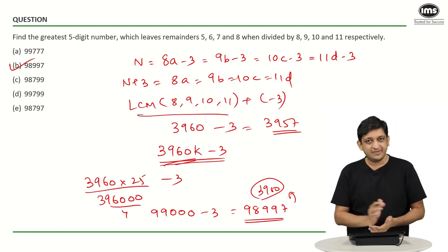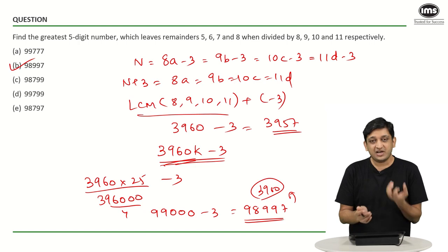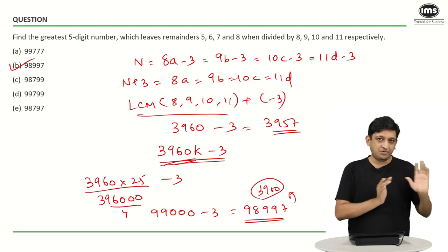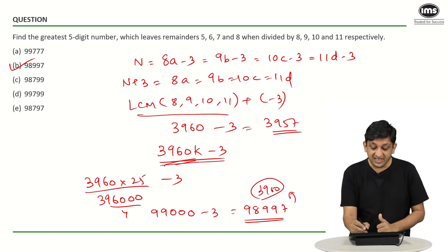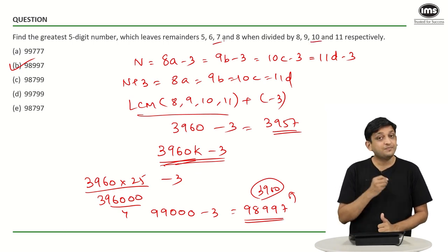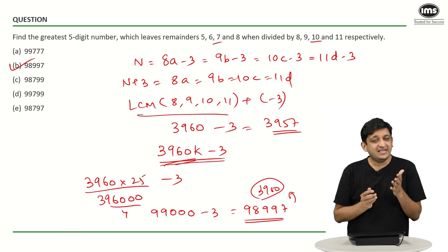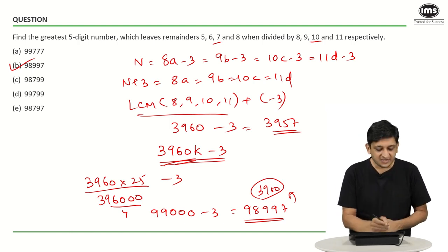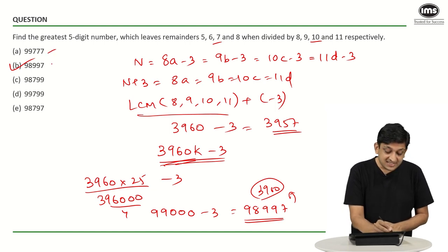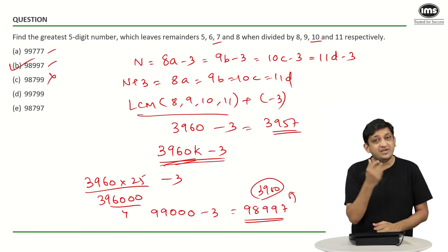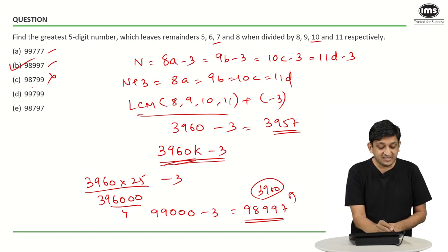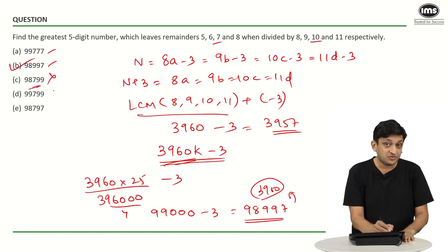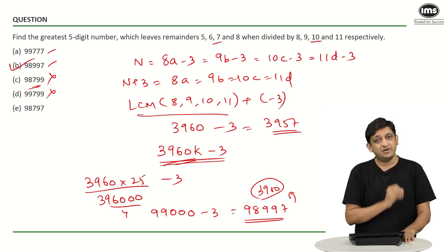The shorter way to solve this question is to use the options. If you divide the number by 10, you should get remainder 7. If a number divided by 10 leaves remainder 7, the units digit must be 7. First option — valid. Second option — valid. Third option is definitely not valid, as its units digit gives remainder 9 when divided by 10. Option 4 will also not work.